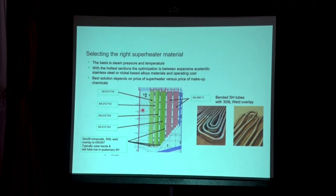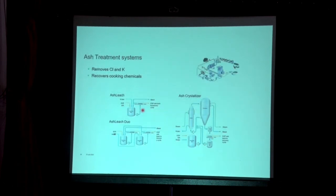In most cases, bent superheater tubes with 309L weld overlay materials are used. The ash treatment system can remove K and Cl and recover key chemicals, though there will be some sodium losses. The investment versus the chemical losses has to be carefully evaluated.